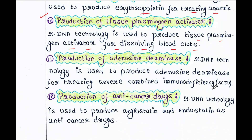Next is production of adenosine deaminase. rDNA technology is used to produce adenosine deaminase for treating severe combined immunodeficiency, or SCID. We can clone this gene in a vector.